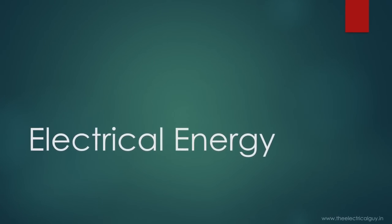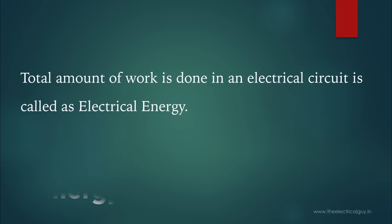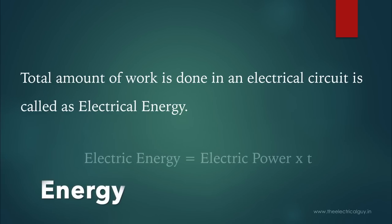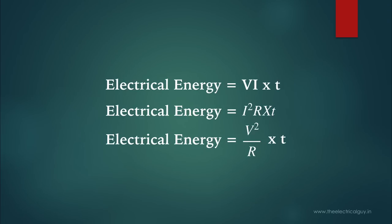Now let's learn about electrical energy. The total amount of work done in an electric circuit is called electrical energy. Simply, we multiply electrical power by time to get electrical energy. Electrical energy equals V·I·t, or I²·R·t, or V²/R·t — you can use any of these formulas to calculate electrical energy.